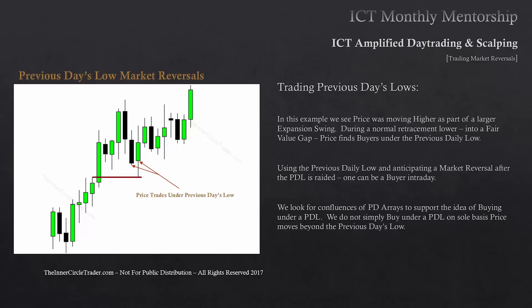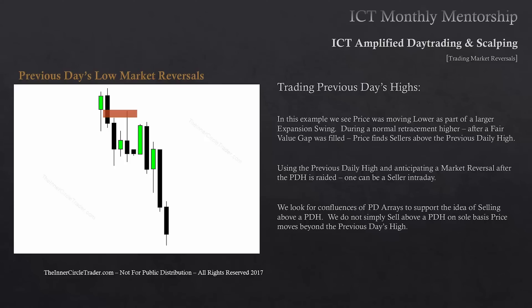The market will come in with institutional sponsorship and send price higher intraday. For trading previous day's highs, I look for reasons to see price move up into a short-term premium array. In this example, price was moving lower as part of a larger expansion swing. During a normal retracement higher after a fair value gap was filled, price finds sellers above a previous day's high. This candle trades above its previous candle, and when price trades above that previous day's high, the market finds sellers and you can be a seller that day.